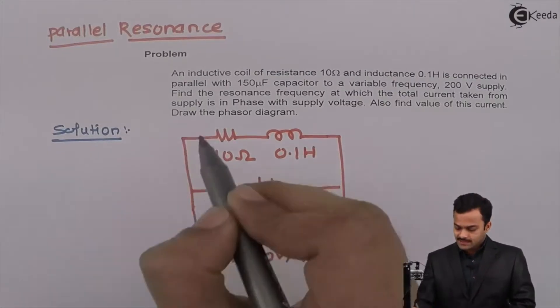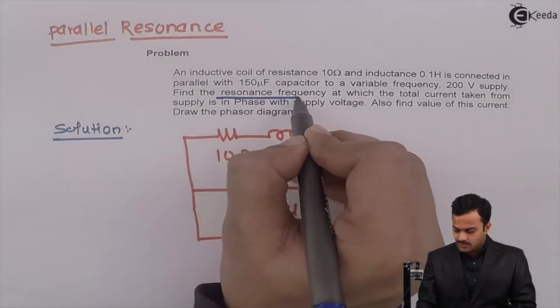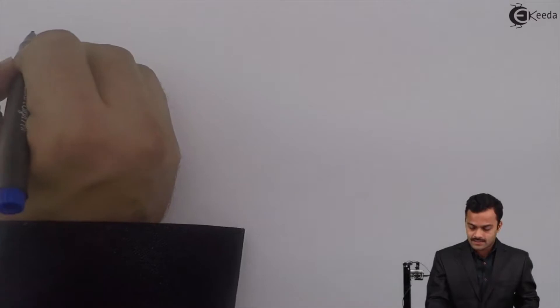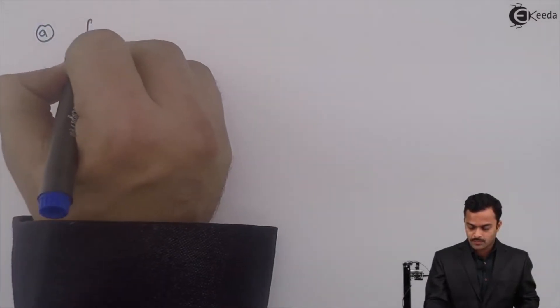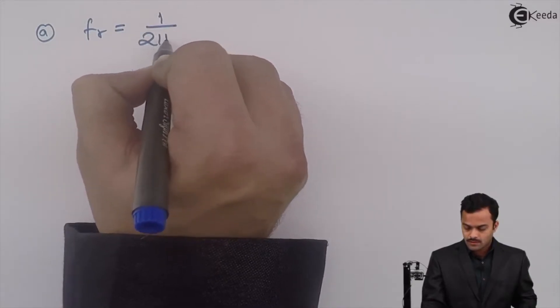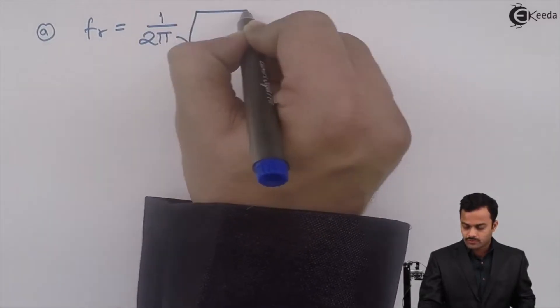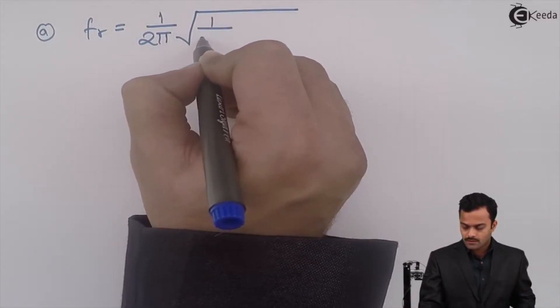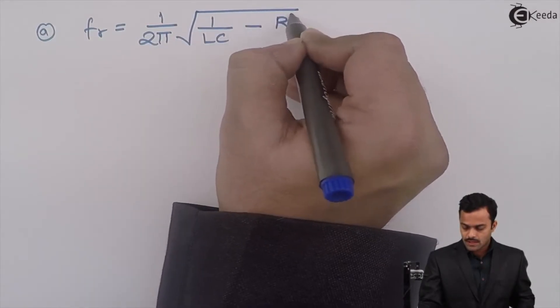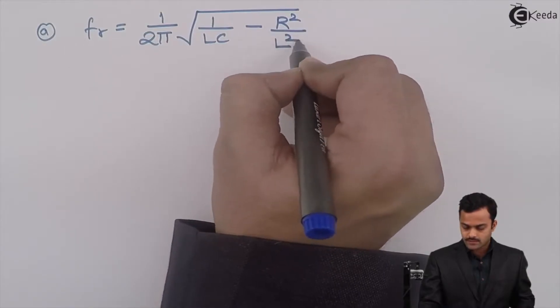So since clearly they mentioned find out the resonance frequency, I can apply the formula of resonating frequency in parallel case. So the first part of the problem will be solved by applying the formula: fr equal to 1 upon 2π root of 1 by LC minus r square by L square.